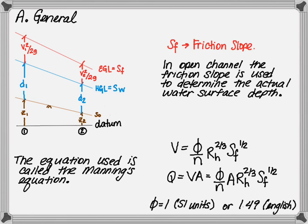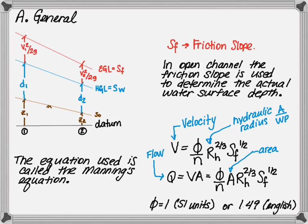Since flow rate is equal to velocity times cross-sectional area, the flow is equal to phi divided by roughness times cross-sectional area times the hydraulic radius to the two-thirds power all multiplied by the friction slope to the one-half power. Note that V is the velocity and Q is the flow rate. The area is the cross-sectional area and RH is the hydraulic radius, which is cross-sectional area divided by wetted perimeter.